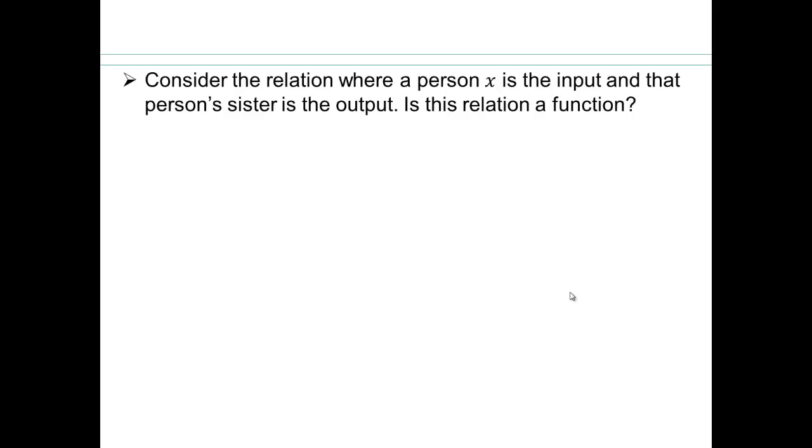Consider a relation where a person x is the input and that person's sister is the output. Pause the video here and tell us whether this relation is a function or not. Assuming you have come back from the pause, what do you think? Do you think this relation is a function? Well, let's think about it. So if I, Shubhangi, was the person, and that's the input then, what would be the output? It would be my sister, which is Anuratha. So my sister would be the output.